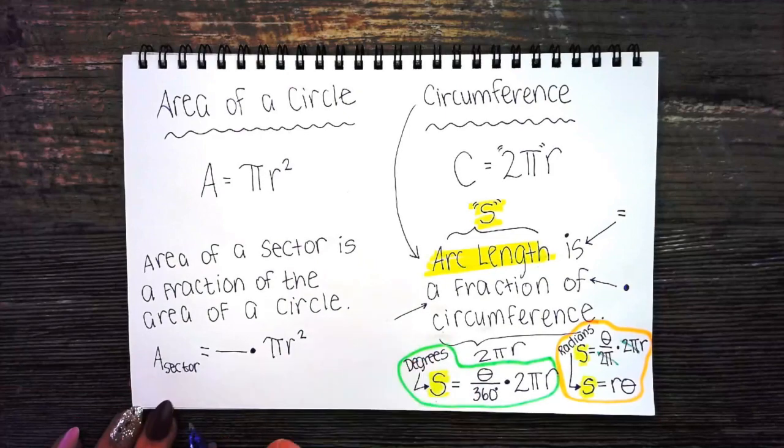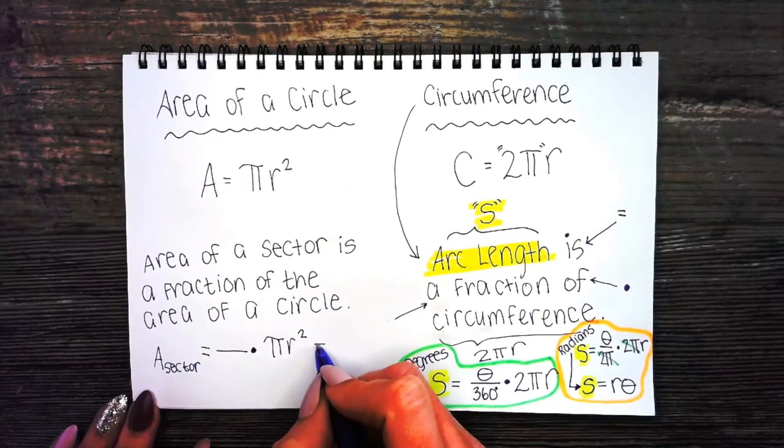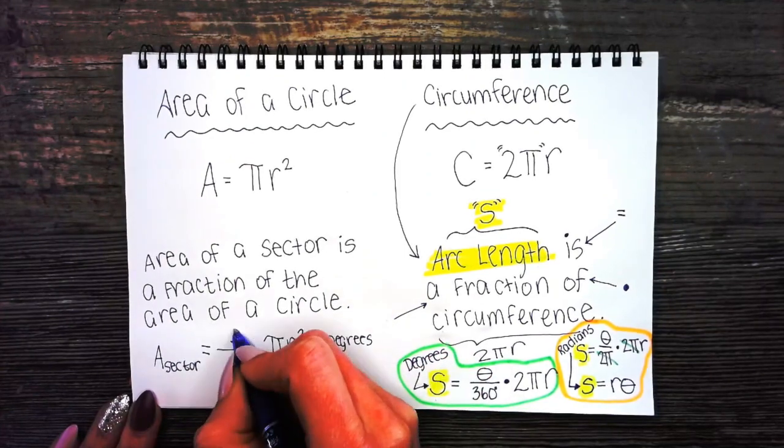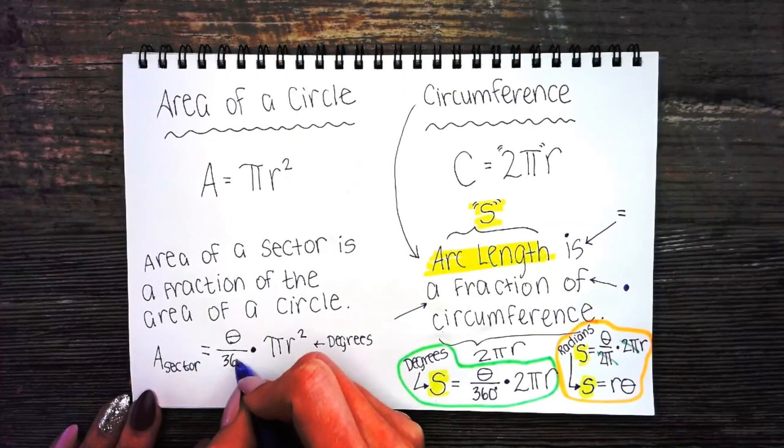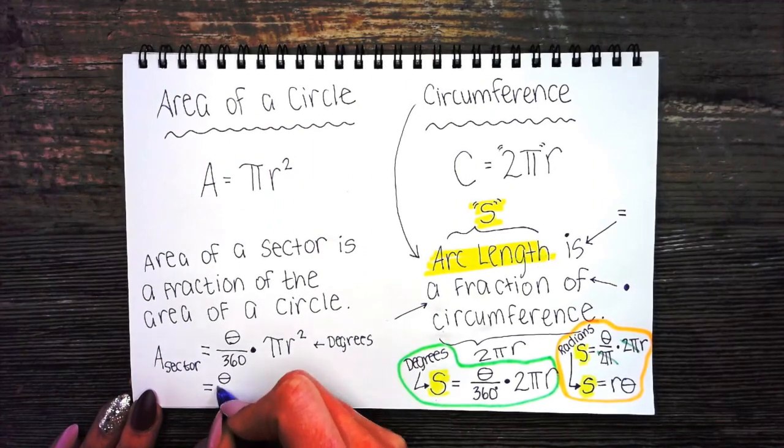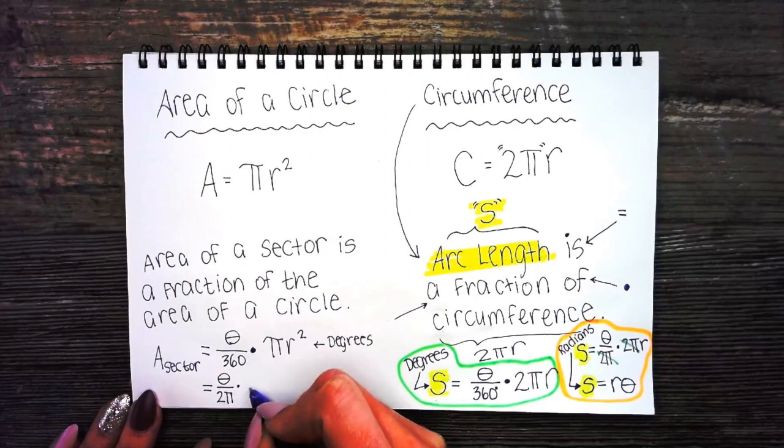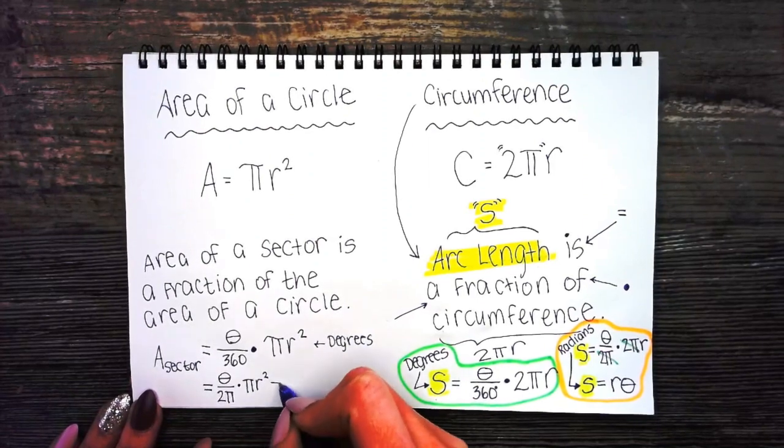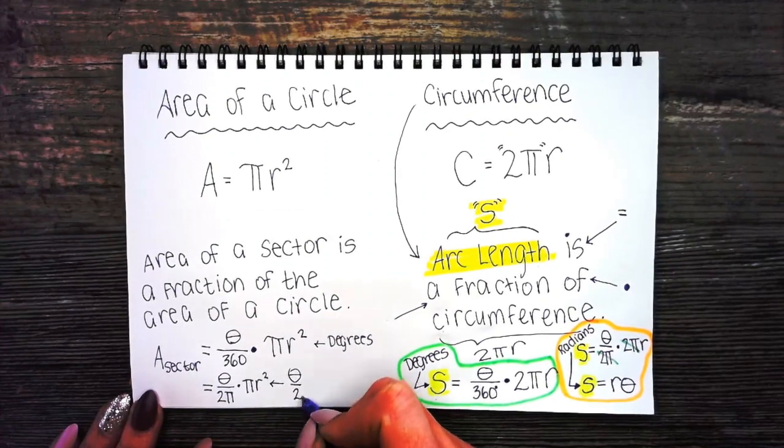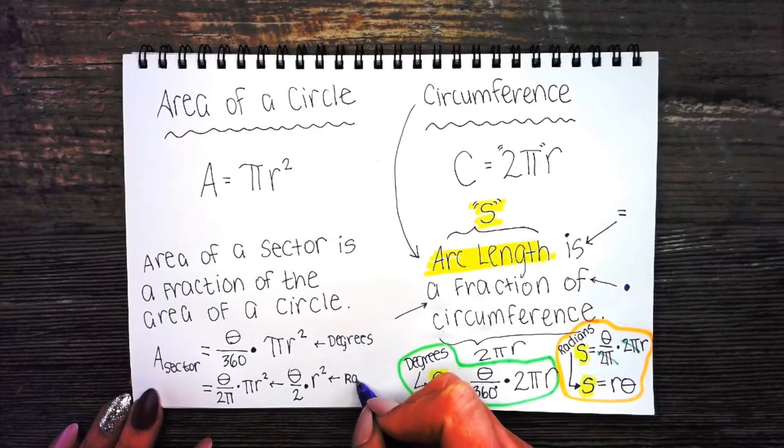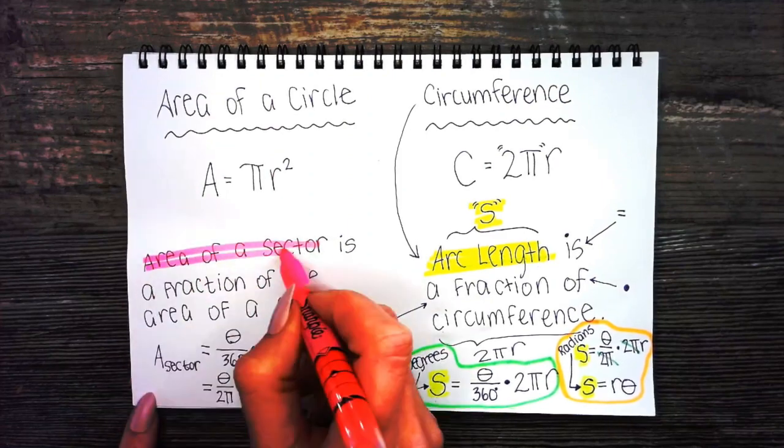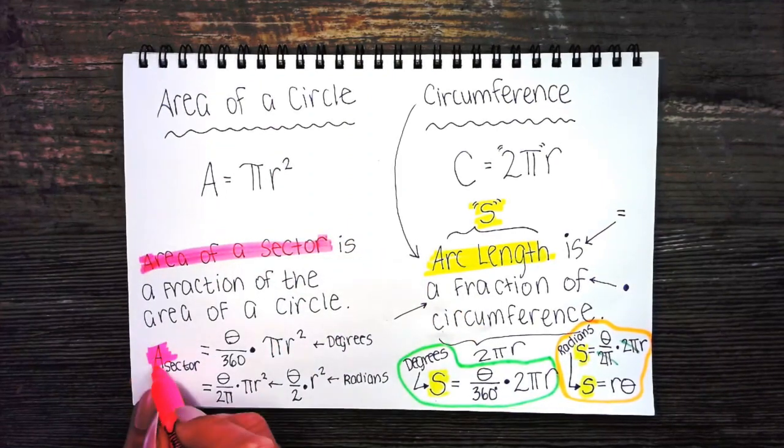If we're dealing with an angle in degrees, the angle is theta over 360. But if the angle is in radians, we have theta radians out of 2 pi times pi r squared. That reduces to theta over 2 times r squared. That's for angles in radians.